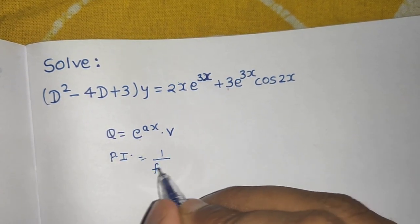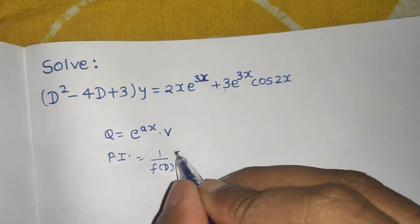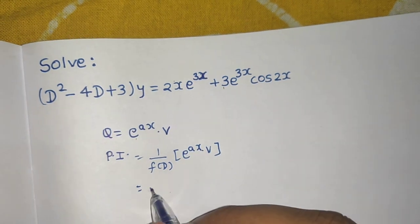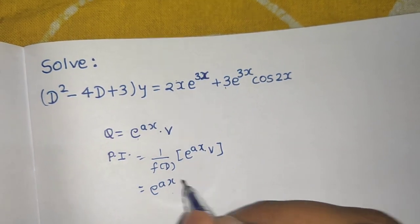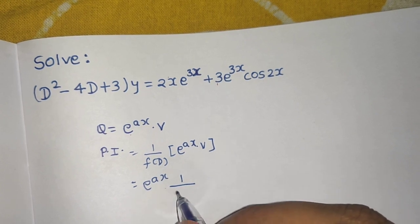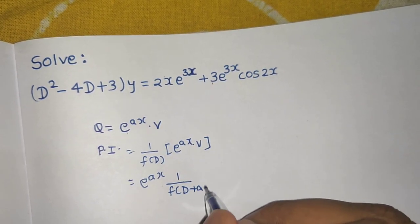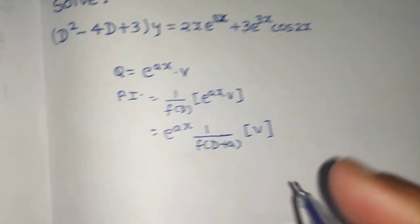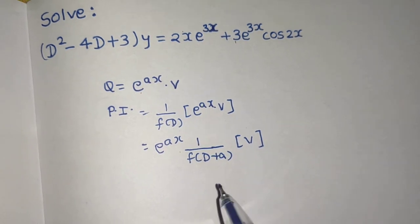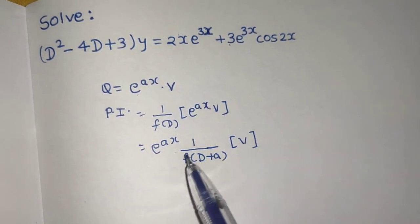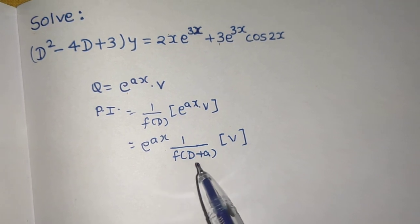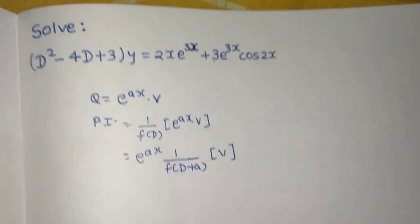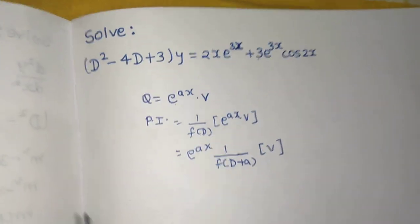The particular integral is 1/f(D) operating on the RHS, which is e^(ax) times v. We take e^(ax) out, and in place of D we write D plus a, so f(D+a) will now operate on v. If this denominator is 0, then you multiply by x and proceed. That remains the same, but this is the basic concept.